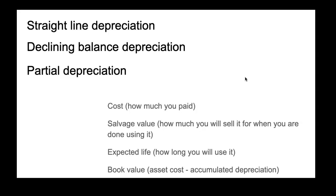The information you need to calculate depreciation is: the cost — how much you paid for the asset; the salvage value — how much you'll sell it for when you're done using it (for example, maybe two thousand dollars for an old car); and the expected life — how long you think you will use it. These parameters are estimates used for evaluations. Depreciation is also very significant for the Schedule F tax form.